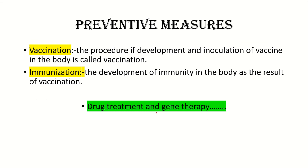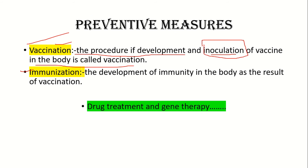The other thing used in disease control is vaccination and immunization. The procedure of development and inoculation of vaccines in the body is called vaccination. Inoculation means injecting into the body the development needed for removing the diseases from your body.